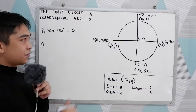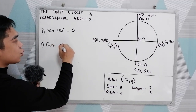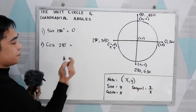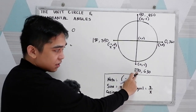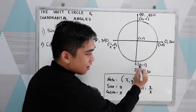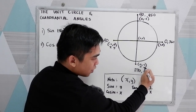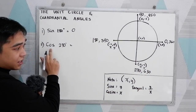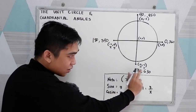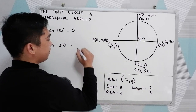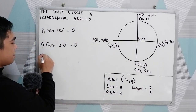Second example: cosine 270°. Locate 270°, and in our coordinate we have x and y. What is cosine? Cosine is x. So the value of x here is 0. Therefore cosine 270° = 0.